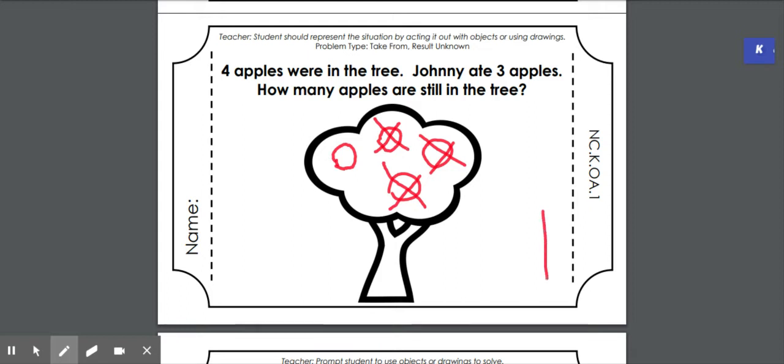One is our answer. Now we can take this problem and write a subtraction sentence. We always go back to how many we had at the beginning. And we drew four apples. So we could say four. Now, did we draw three more or did we have to cross three out? We crossed three out. So we're talking about subtraction here. So I'm going to use minus four minus three because that's how many Johnny ate equals one. One apple was left in the tree. Great job.